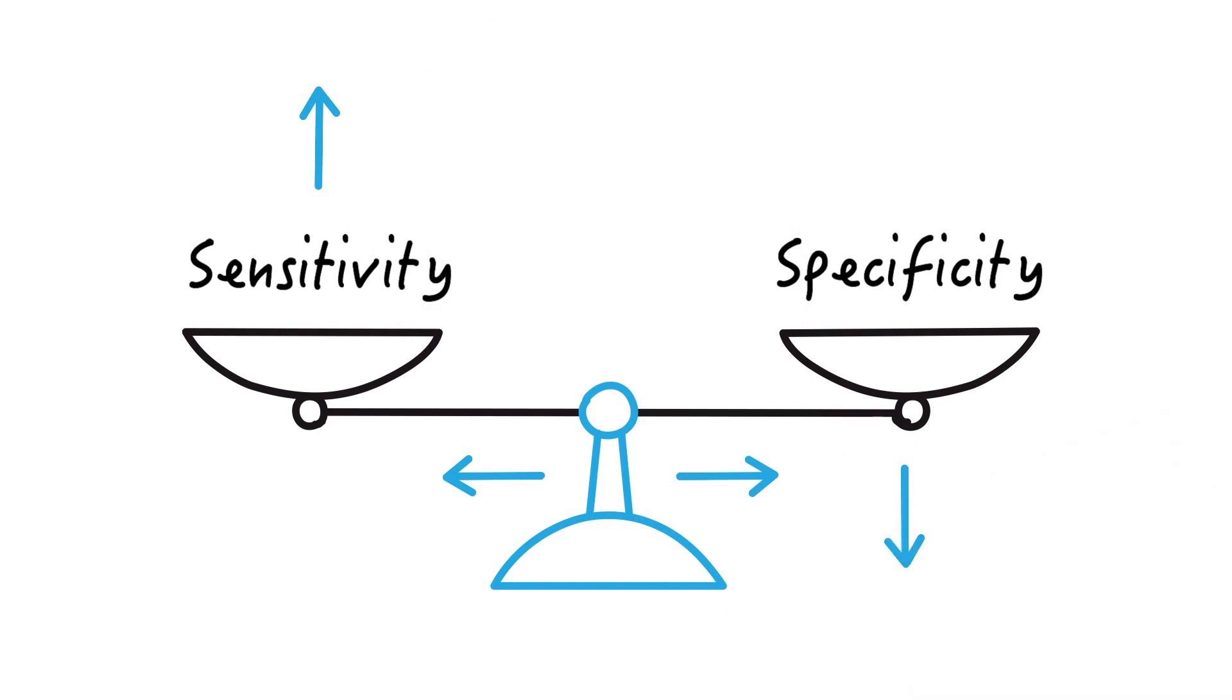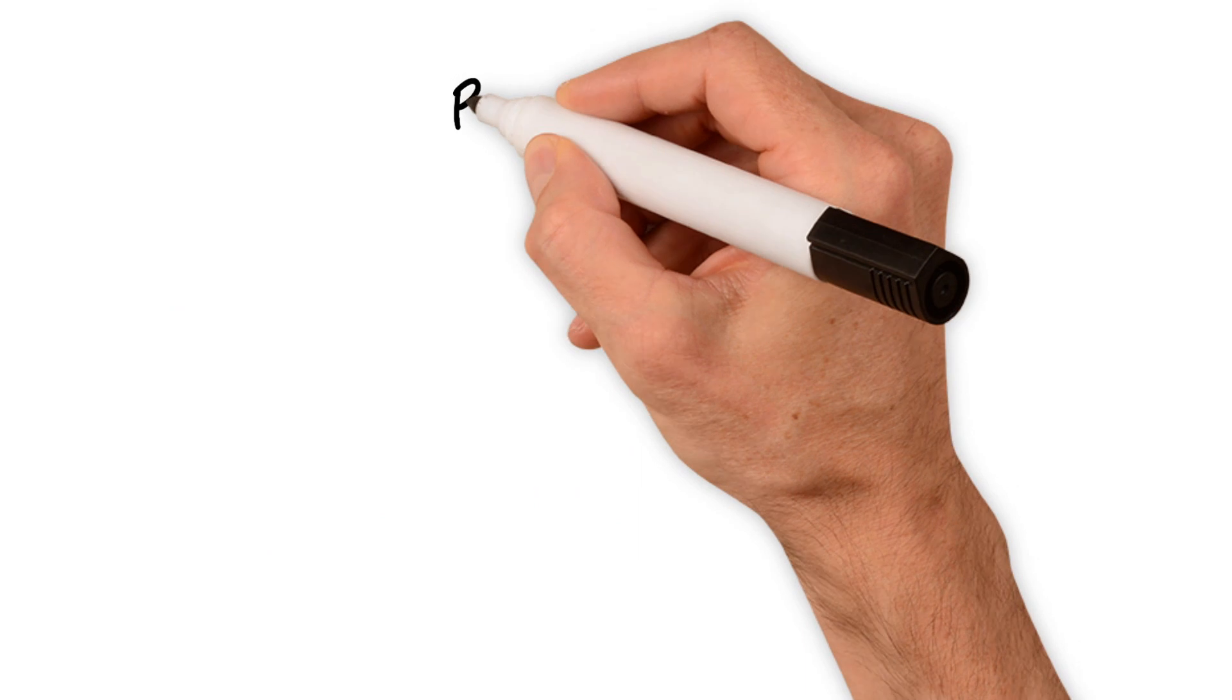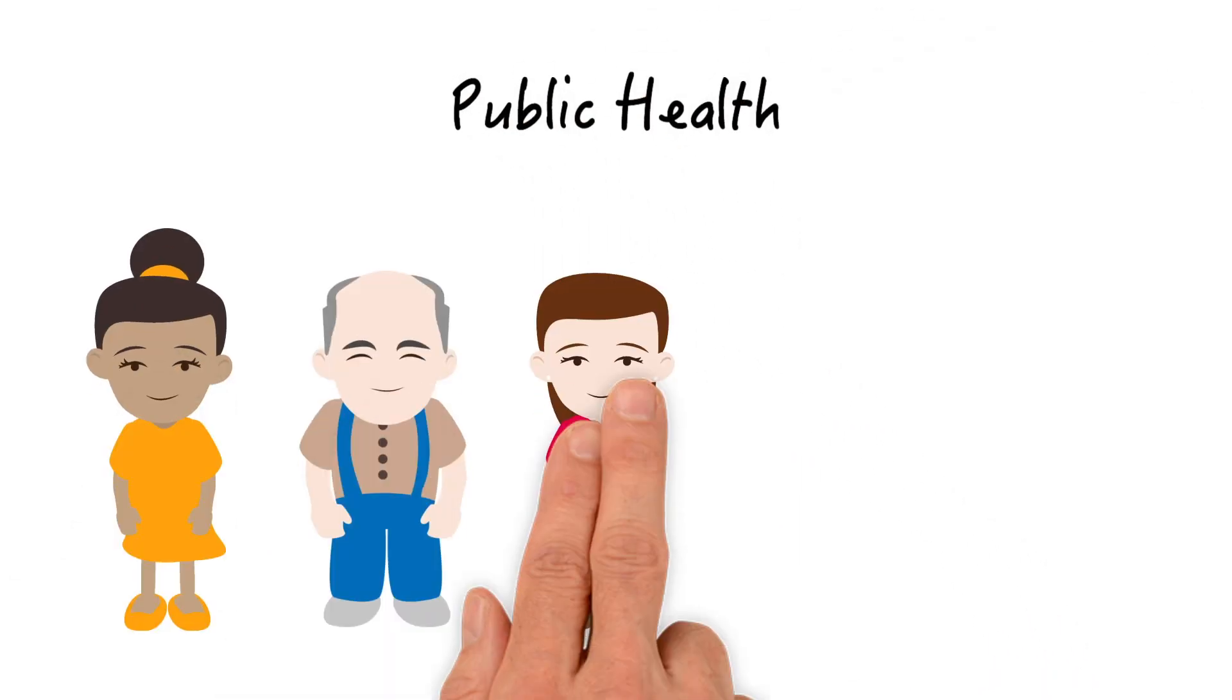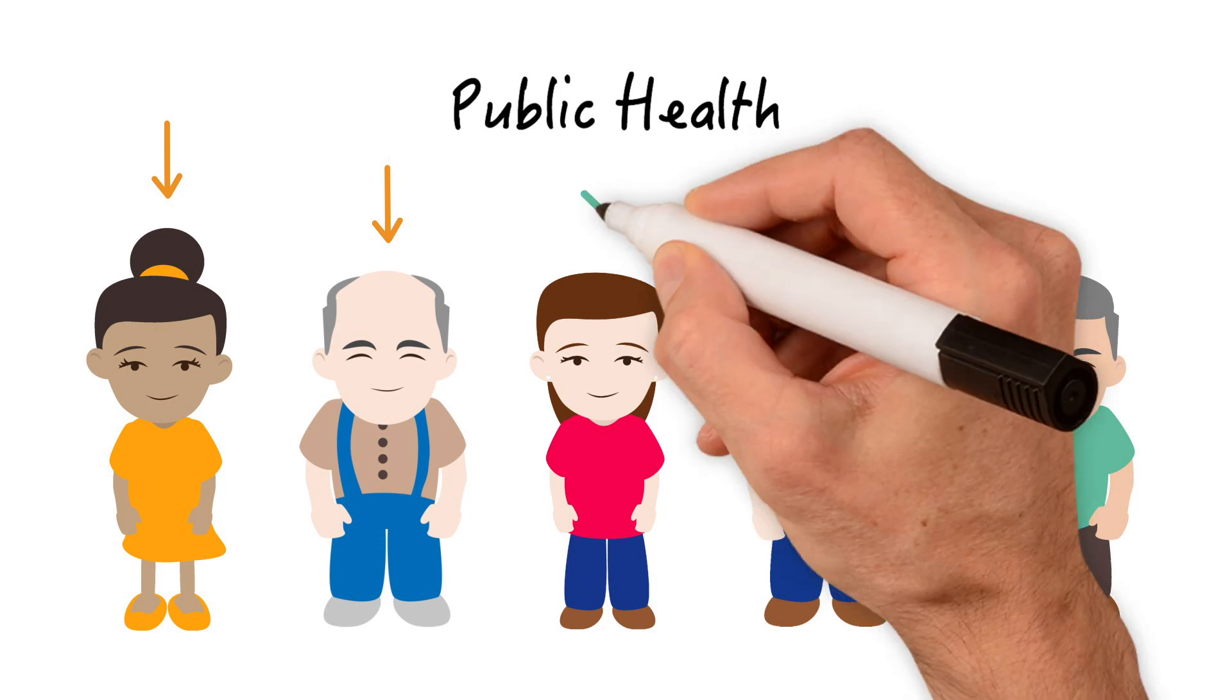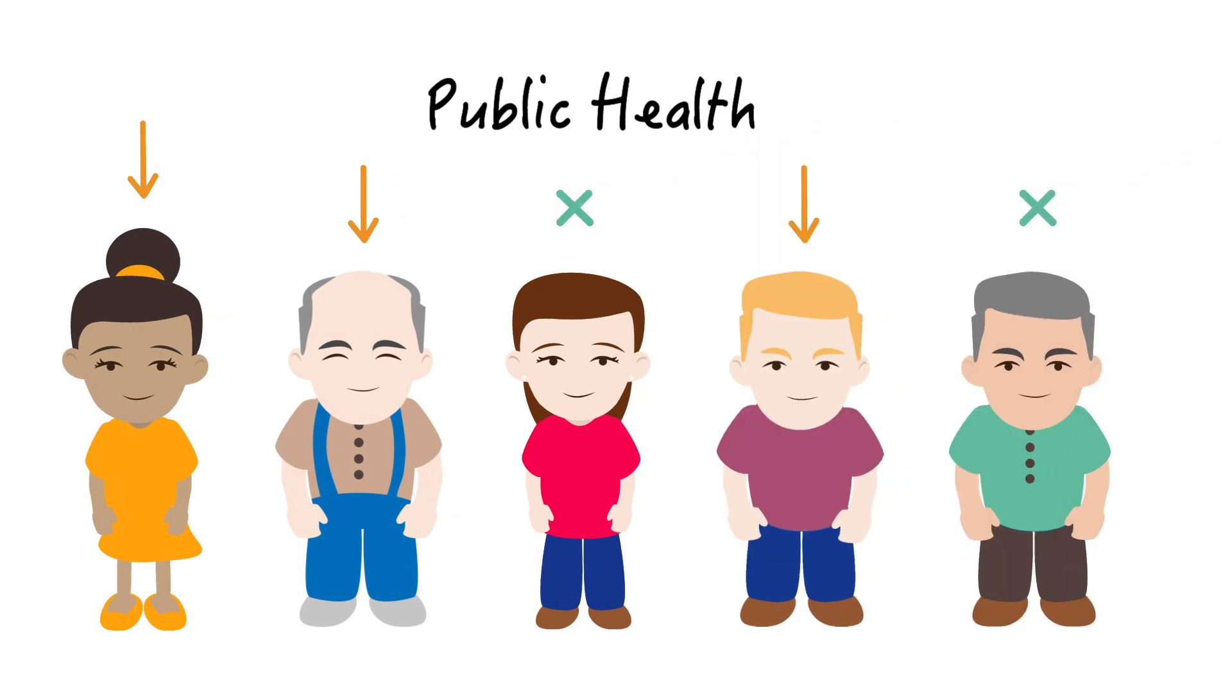As one goes up, the other one goes down and vice versa. Sensitivity and specificity are great for public health purposes because they tell us how many diseased individuals in our population we're going to pick up with the test and how many non-diseased we'll be able to rule out.